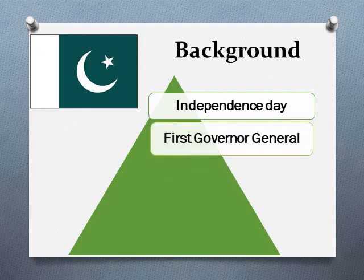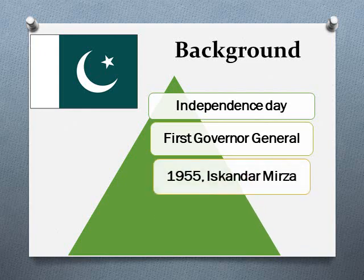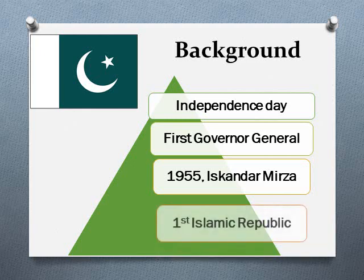The first Governor General of Pakistan was Muhammad Ali Jinnah, also known as Quaid-e-Azam. Then in 1955, Sikandar Mirza became the Governor General of Pakistan. The following year, Pakistan became a republic — the Islamic Republic of Pakistan — so Sikandar Mirza's title changed to President of Pakistan on 23rd March 1956. Pakistan was the world's first Islamic Republic.